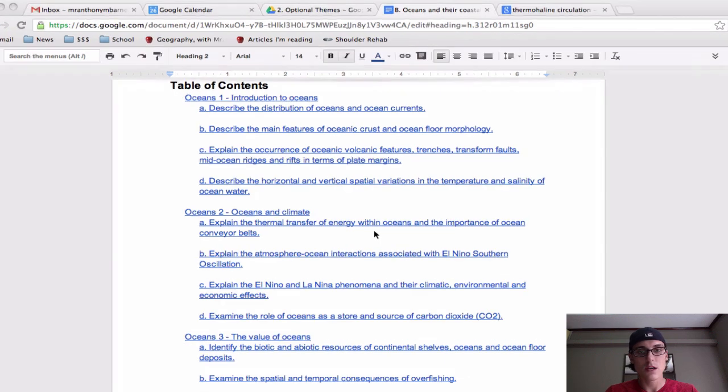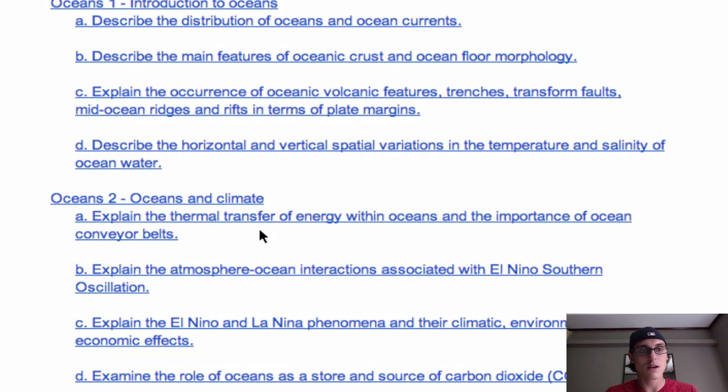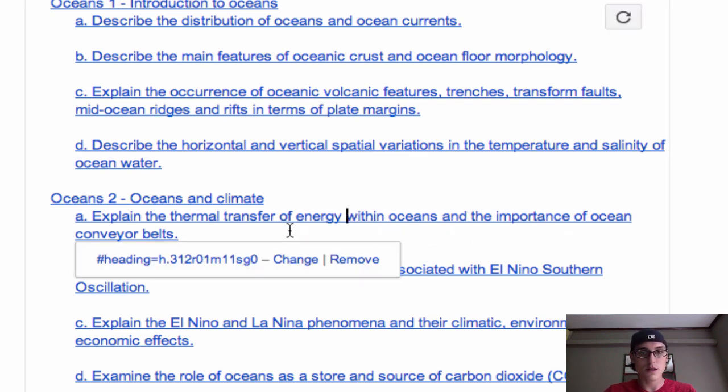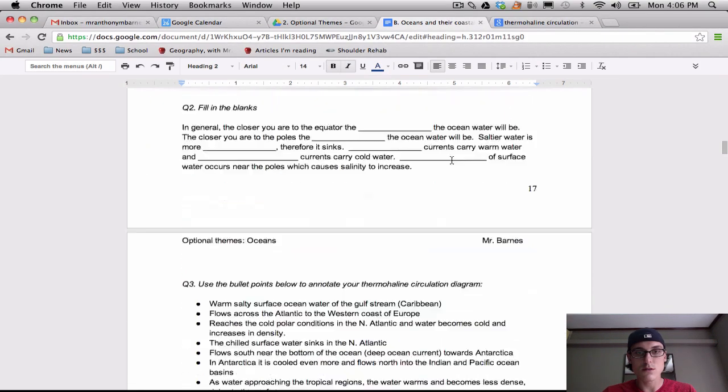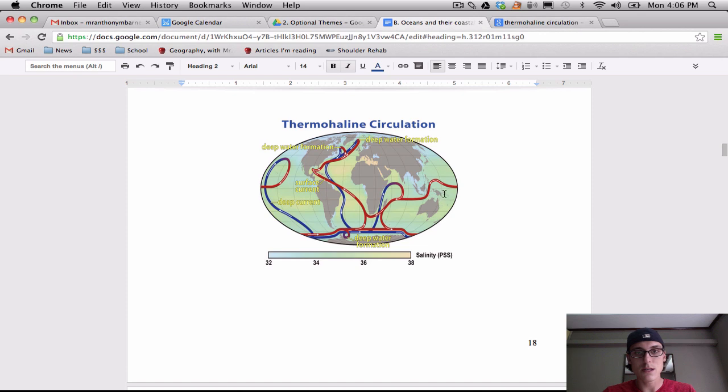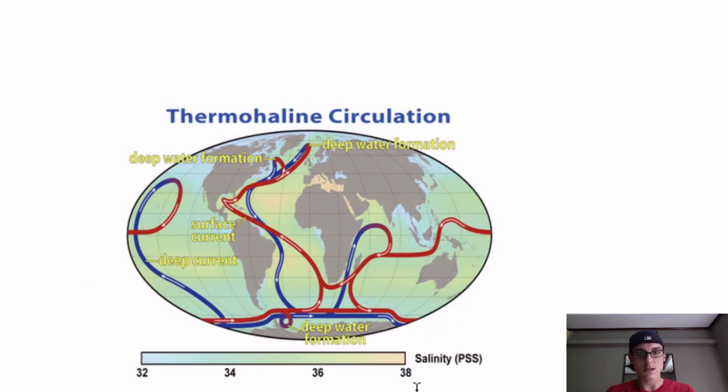You can find this section in your syllabus right here under explain the thermal transfer of energy within oceans and the importance of the ocean conveyor belts. So if you click on that, it should bring you down to this page. What you're going to want to do is just scroll a bit till you get to this map. Alright, so let's take a look at this map and what this map actually means.